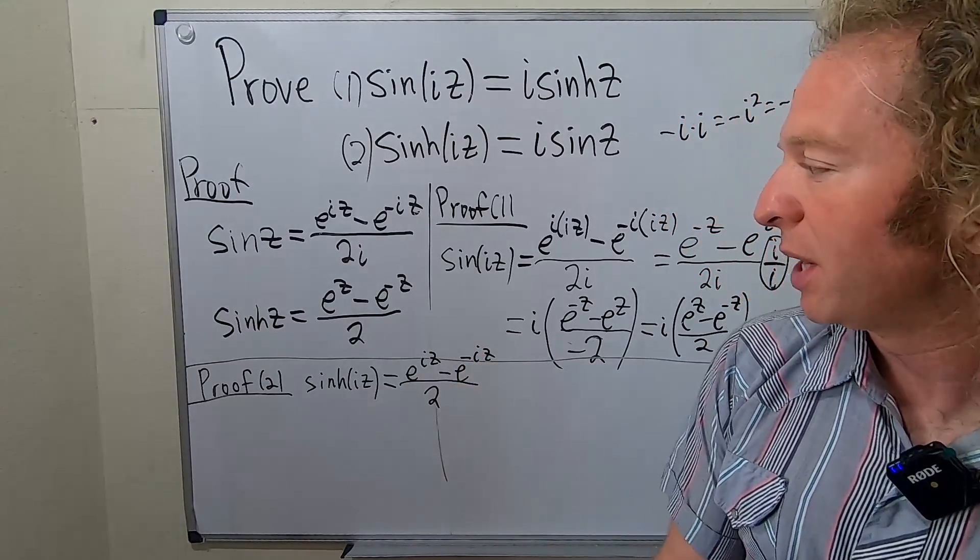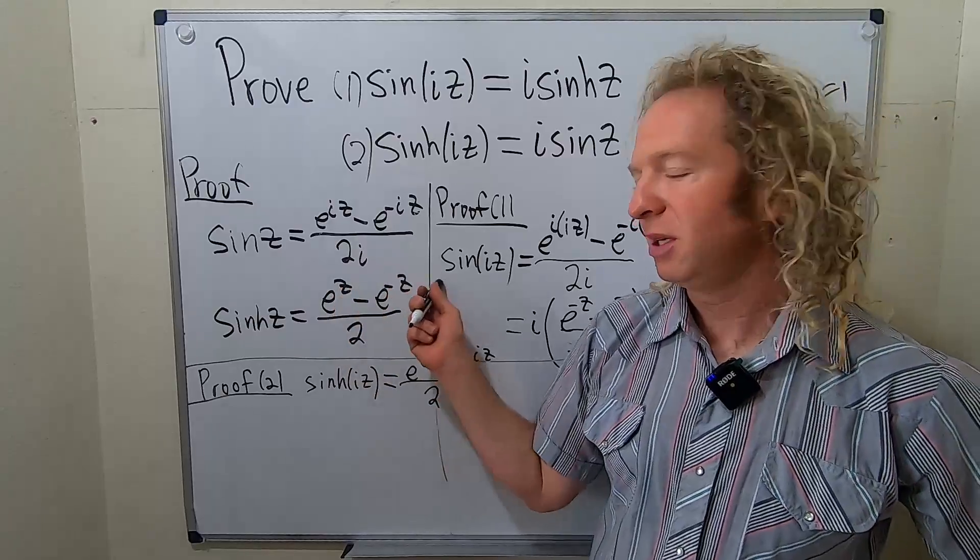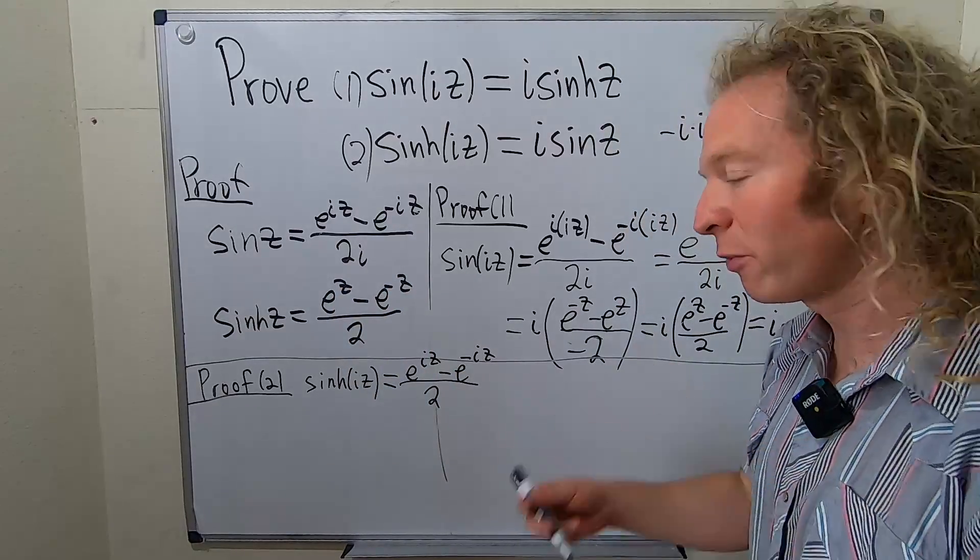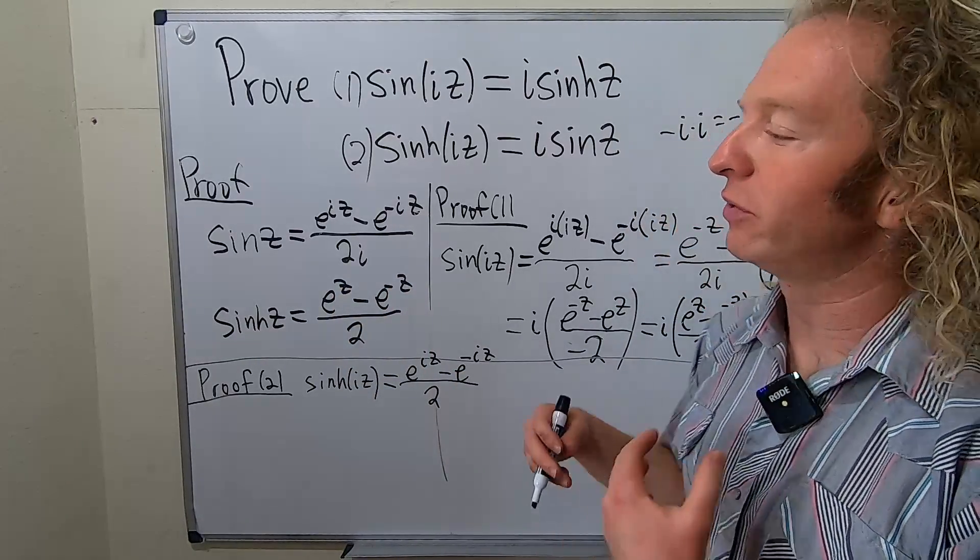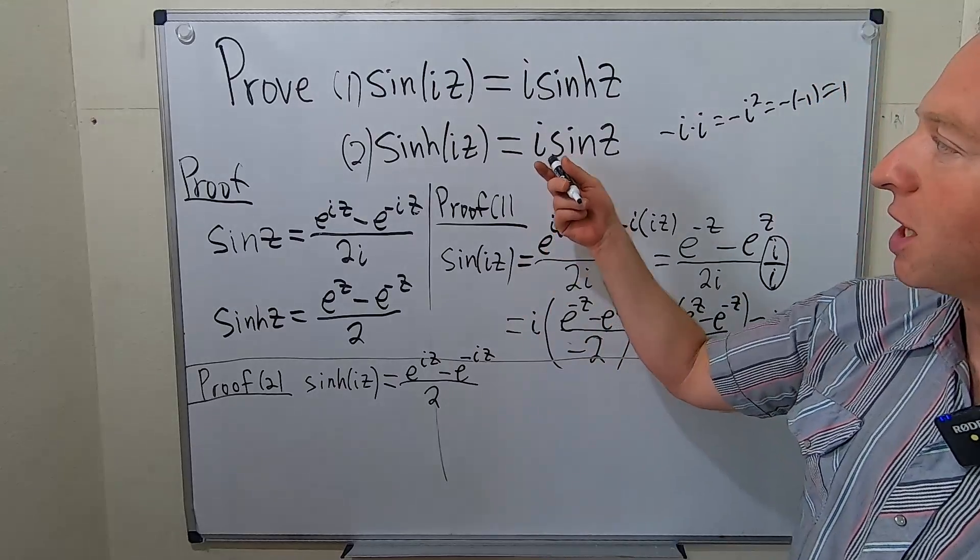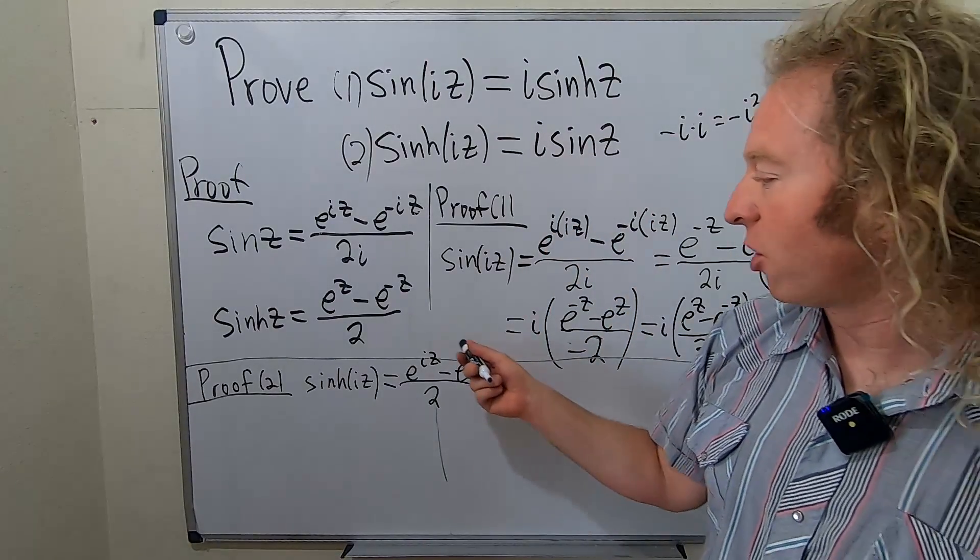Okay, so now I think we have to pause. So all we've done is replace z with iz. So what are we trying to show? Right now I have to think, what are we even doing? Well, we're trying to show it's i sin z.